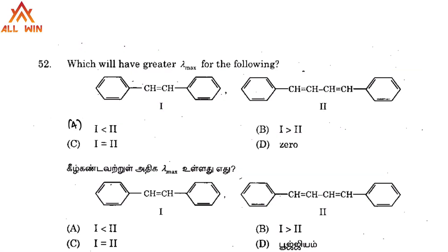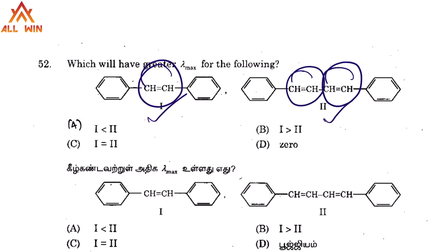First question: which structure will have greater lambda max? We have structure 1 and structure 2. The key concept here is conjugation. If conjugation is increased, the lambda max increases. Looking at the structures, there is an extra CH=CH double bond — that means extra conjugation — giving a higher lambda max.